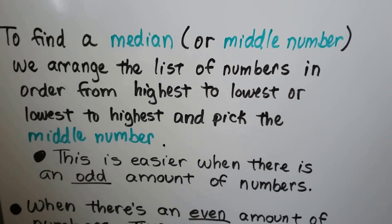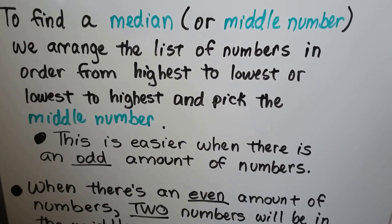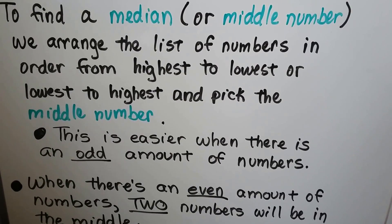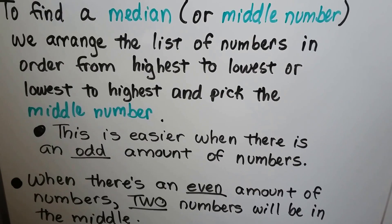To find a median or middle number, we arrange the list of numbers in order from highest to lowest or lowest to highest. It doesn't matter which one as long as they're in size order, and we pick the middle number.